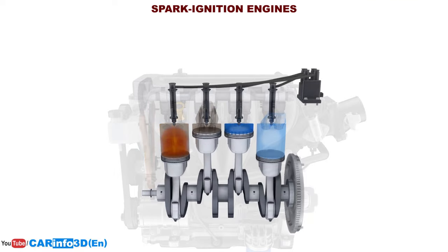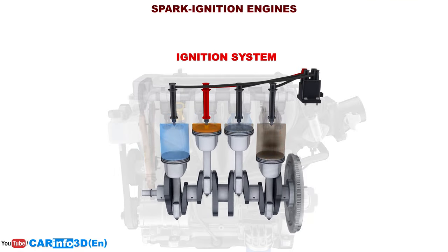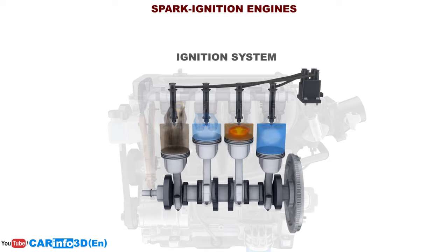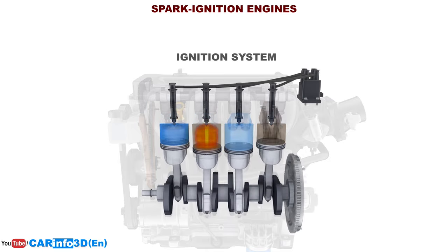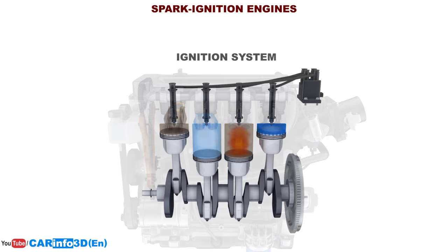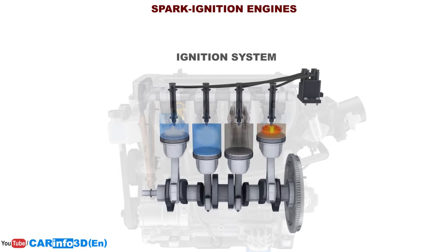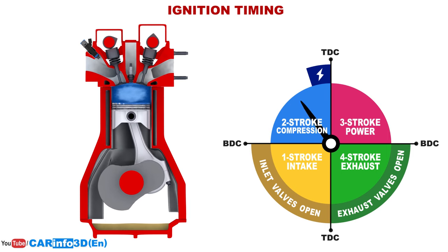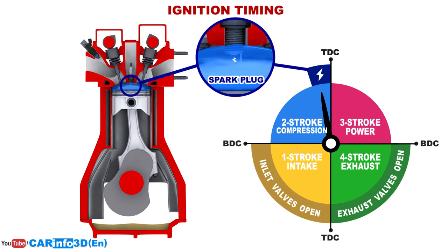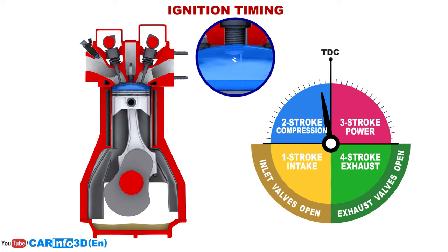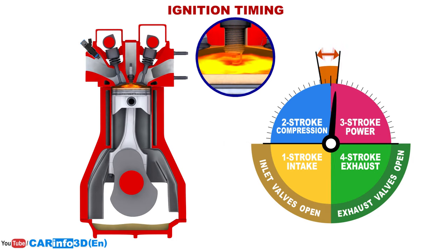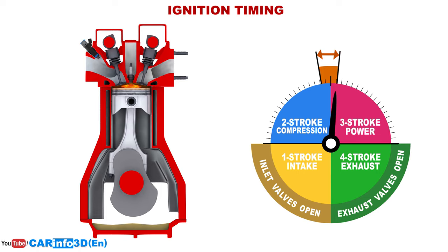Gasoline engines are spark ignition engines, since it is the ignition system — namely the spark plug — that ignites the fuel-air mixture. The primary goal of this system is to ignite the fuel-air mixture on time, as ignition timing is critical to efficient engine operation. There is some time between the appearance of a spark and the complete ignition of the fuel-air mixture and maximum gas pressure, during which the piston moves some distance. For maximum engine efficiency, the piston must be within 10 to 12 degrees of top dead center at maximum gas pressure, meaning the ignition system must start in advance.